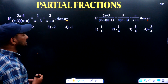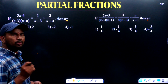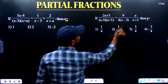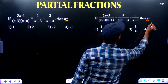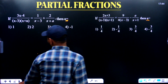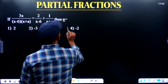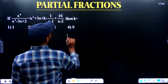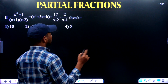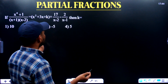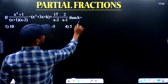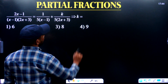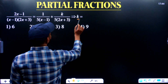If you look at all these questions, the common point is a single unknown. It is a single unknown — like 'a' here, single unknown 'a' here, a single unknown 'k' here. Again single unknown 'k'.